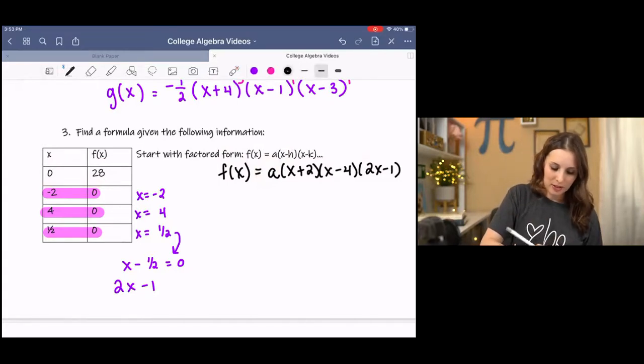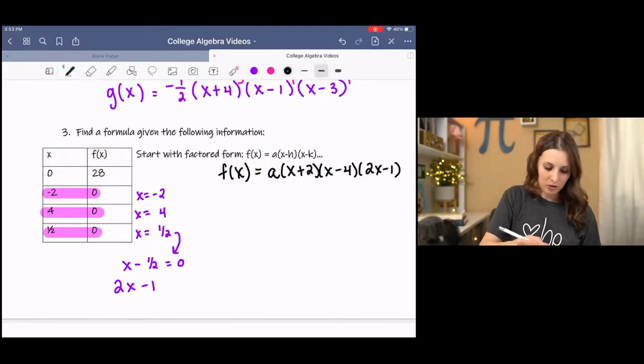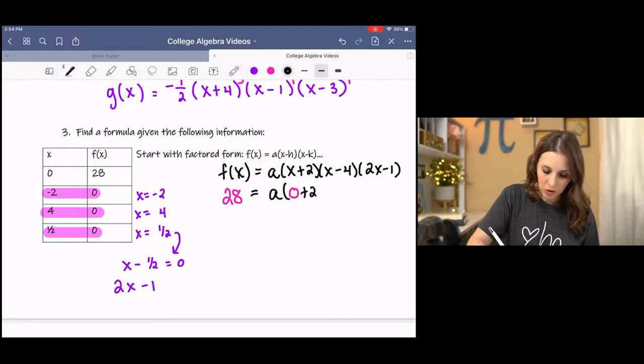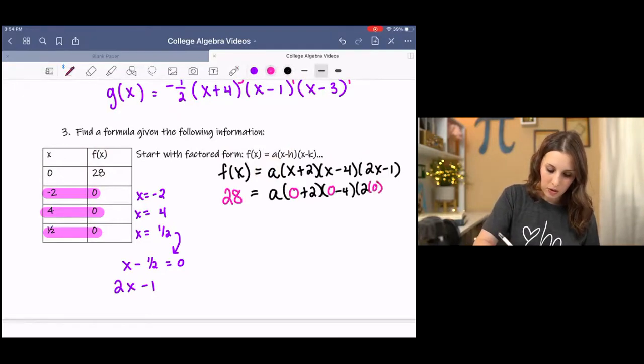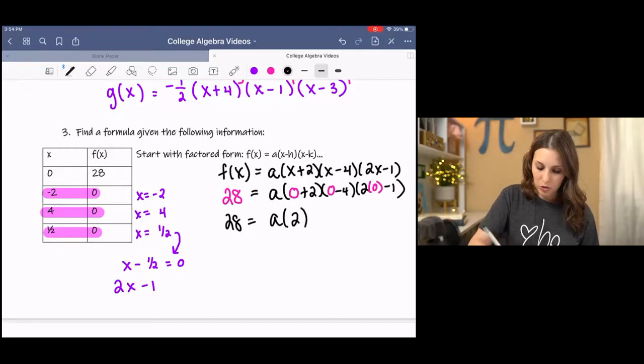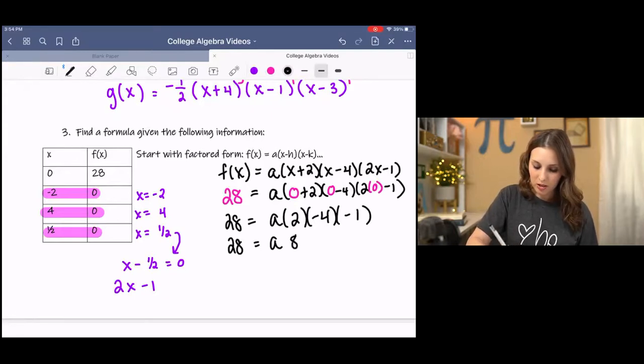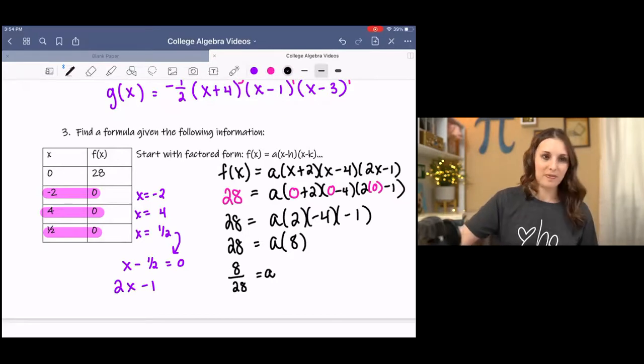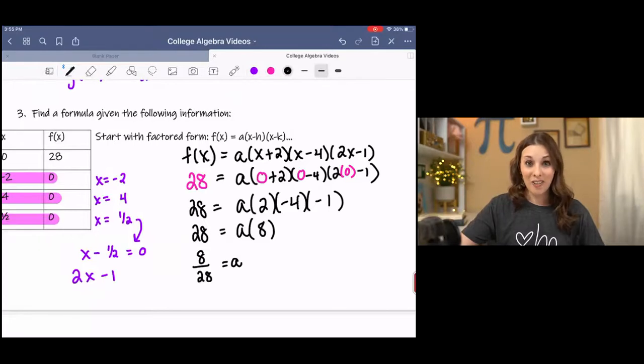Coincidentally, there's another point. So we're going to plug that point in. This is x, sorry, this is x, this is y, or even we can leave it as f of x. So 28 equals a times x is 0 plus 2, x is 0 minus 4, x is 0 minus 1. Then we simplify inside the parentheses. 0 plus 2, 0 minus 4, 0 minus 1. Then multiply. Negative 8 times negative 1 is positive 8. Then divide to solve for a.